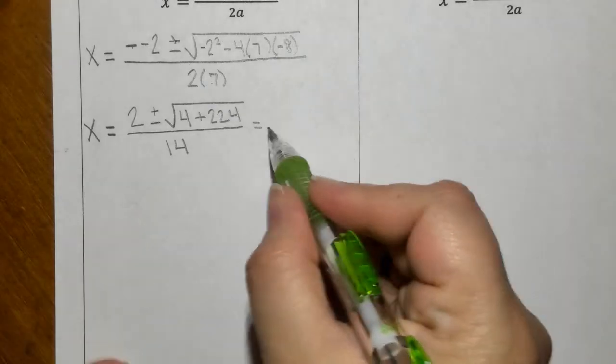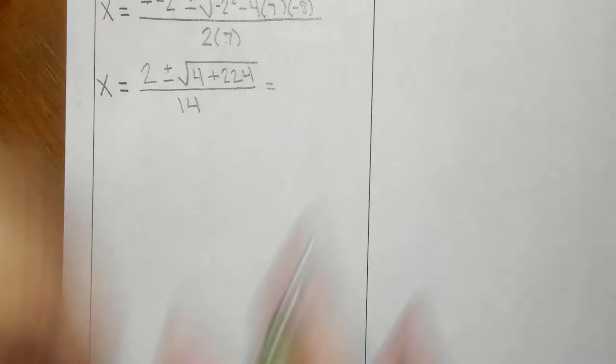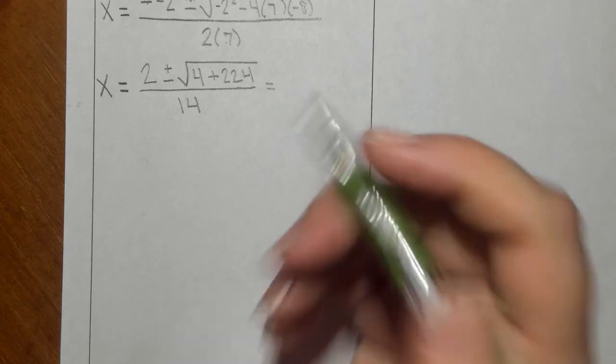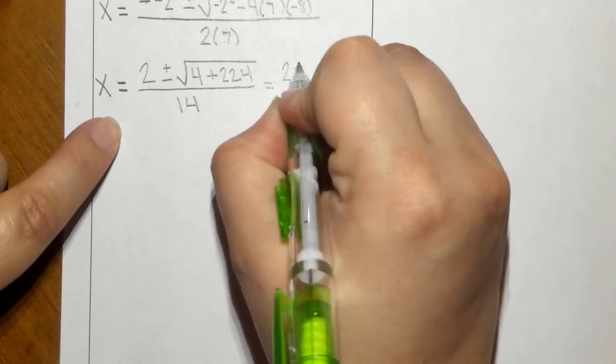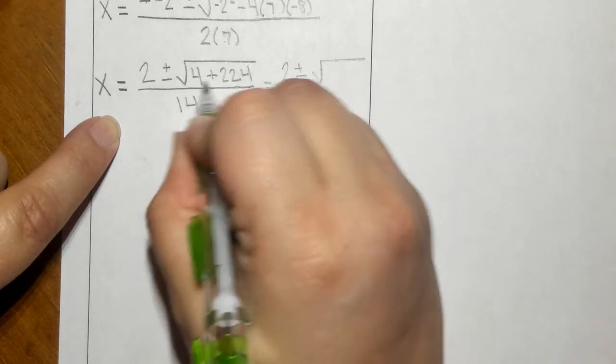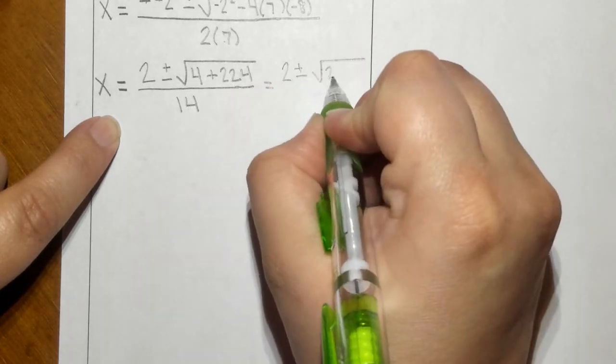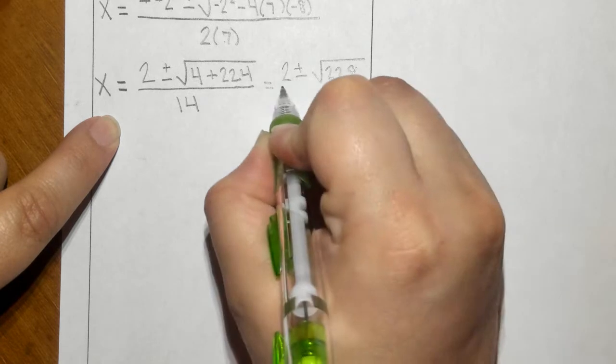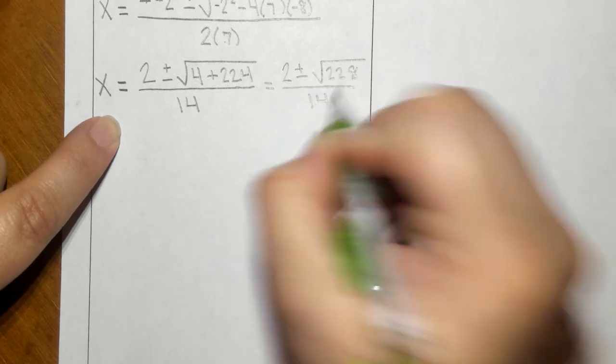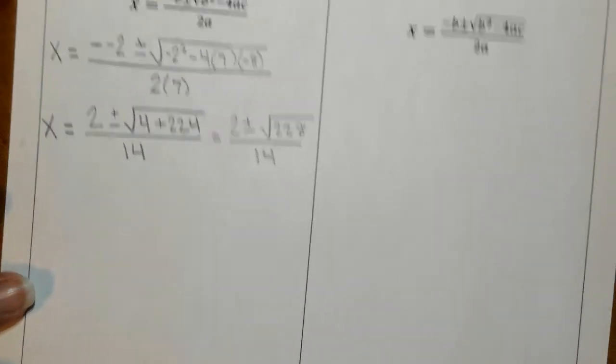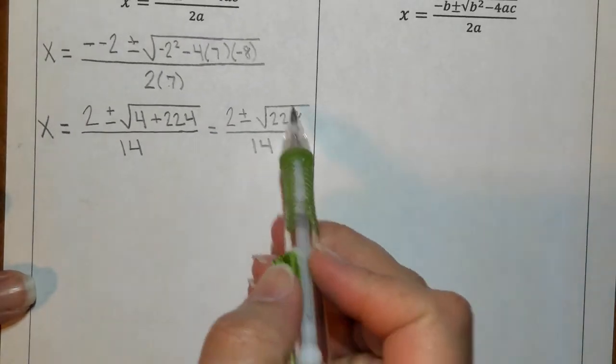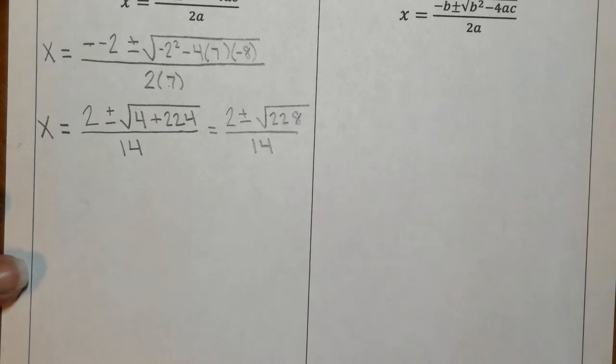Now I'm going to use this space here because I have a lot of work. So now these I'm going to add together. Four plus 224 would be 228 divided by 14. I see there's a little bit of a glare here. So that 228 in the radical can definitely be divided by two. It can be simplified.